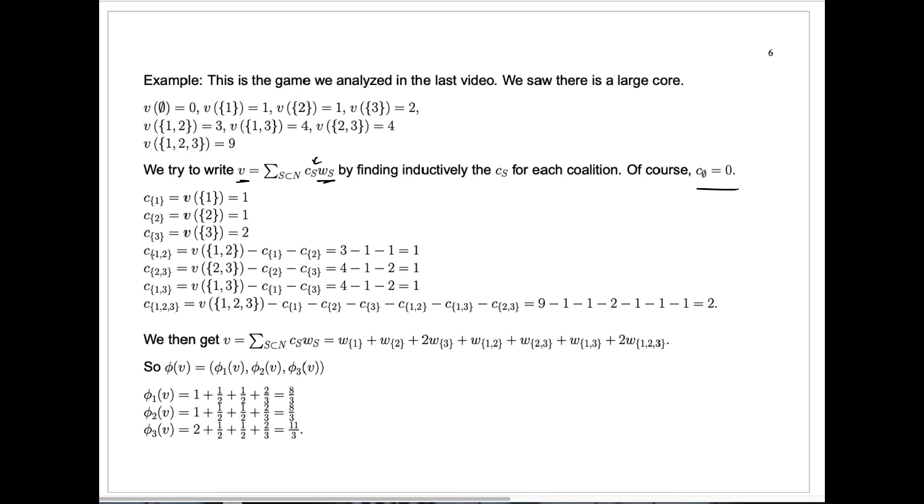Now to get the constants for larger sets, we proceed already knowing the constants for their subsets. C for the set one, two is just the value for that set one, two, and we subtract the c's for each subset. The only subsets are the set containing one and the set containing two and the empty set, but we're always going to ignore that since that's zero. So we just get three minus one minus one, which is one.